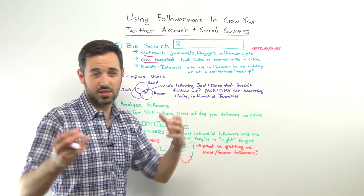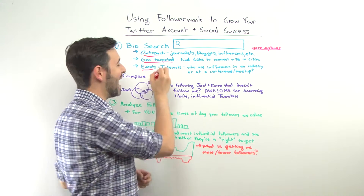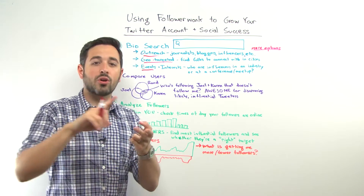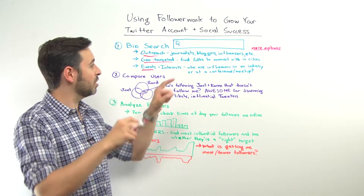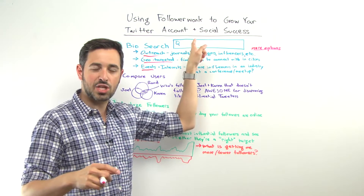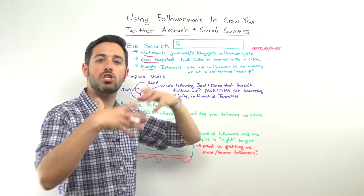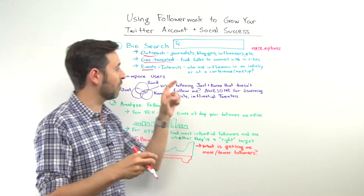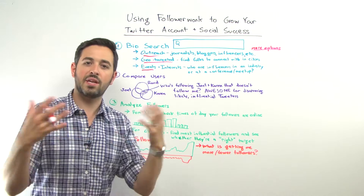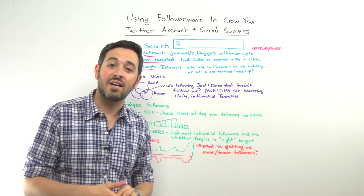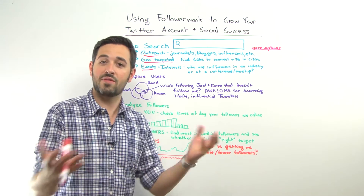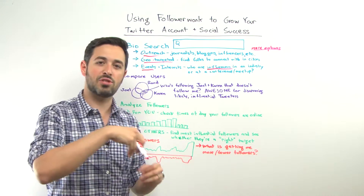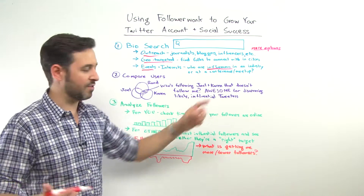Events and interests are another way to use this. If you're going to be at a specific event — even an online event, a webinar, or participating in a Twitter chat — you can look for people who have those hashtags and who are in a specific location or field. So if I'm going to Dublin later this month, I might search for SEOs who happen to be in Dublin and see if I can connect with those folks, get them to come to an event I'm speaking at. You can really use this to figure out who are the influencers at a specific conference or meetup.